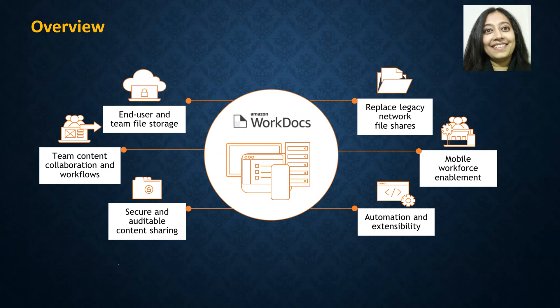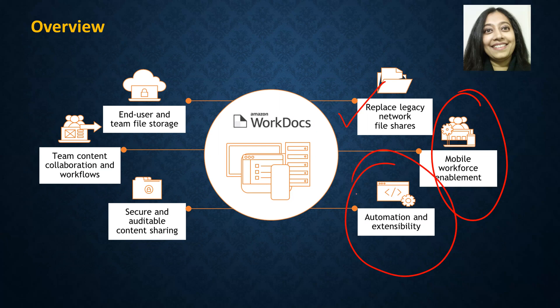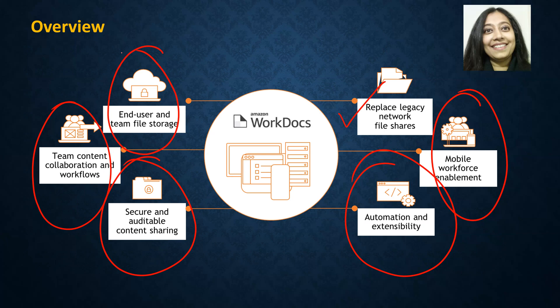This picture over here shows the different things that Amazon Workdocs does. If you have legacy network file shares, you can copy this content over and have that network drive attached right to your laptop or desktop. The good part is that now, instead of being on a shared network, your files are on the cloud — it's a cloud-based file storage service. You can use the mobile app to enable your workforce to look at files on the go. Any extension or automation is possible, including integrating this with your applications. Secure auditable content sharing, collaboration, and workflows is pretty straightforward. And of course, it's team file storage.